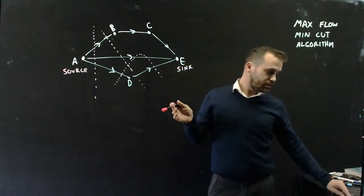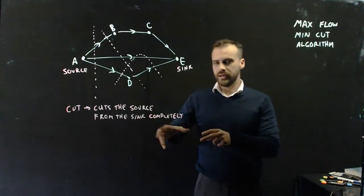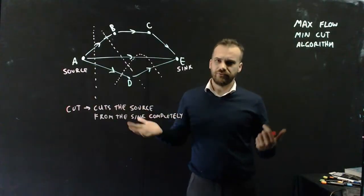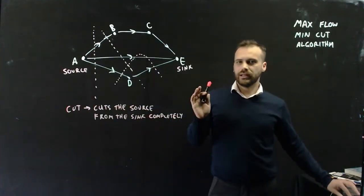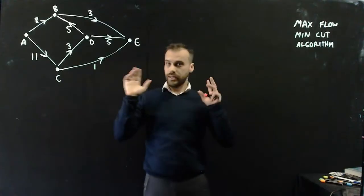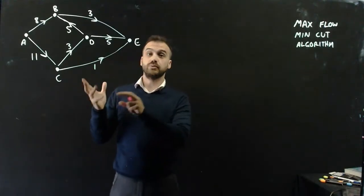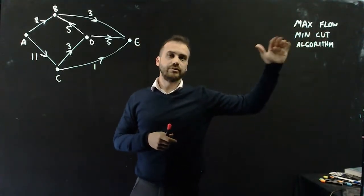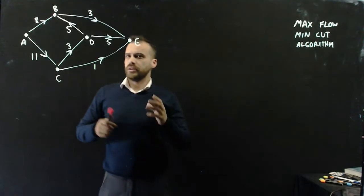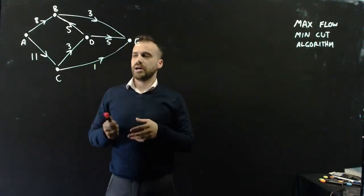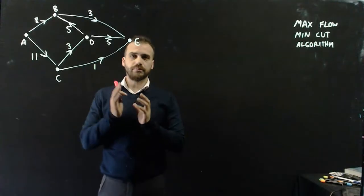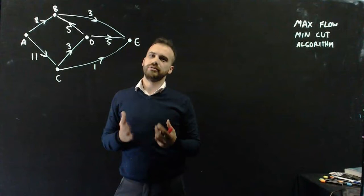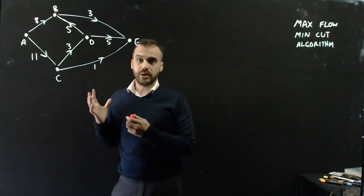Definition of a cut: a cut cuts the source from the sink completely. So let's do a more complicated example. Here is my network — you can see it's weighted this time, and there's an important reason for that. We're going to be finding the maximum flow using the minimum cut algorithm. The first step of the minimum cut algorithm is drawing in all possible cuts. If you miss a cut, you've stuffed up the algorithm, so we need to be really careful about making sure we do every single cut.